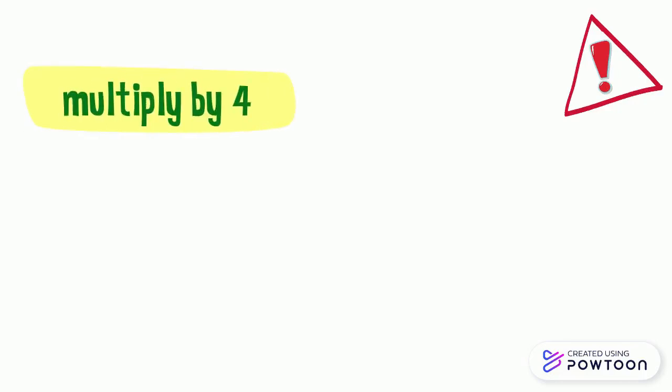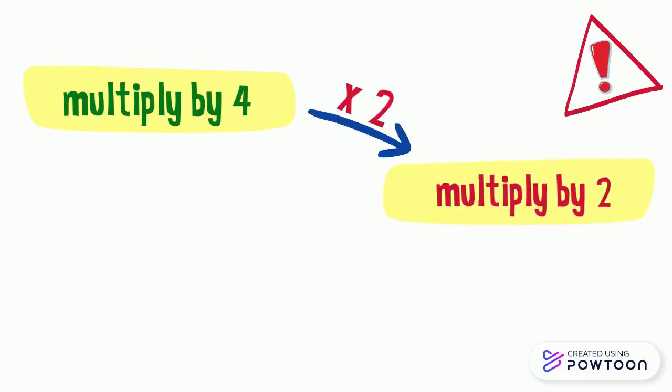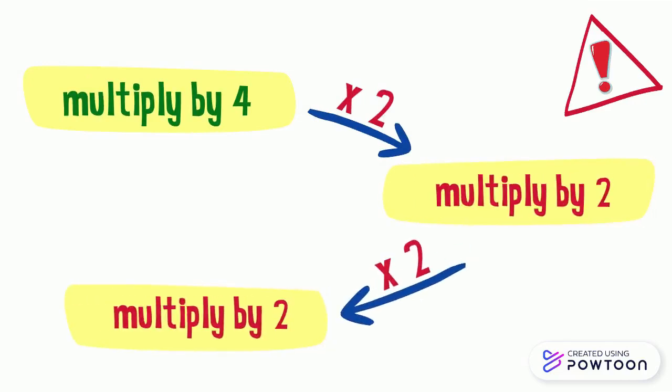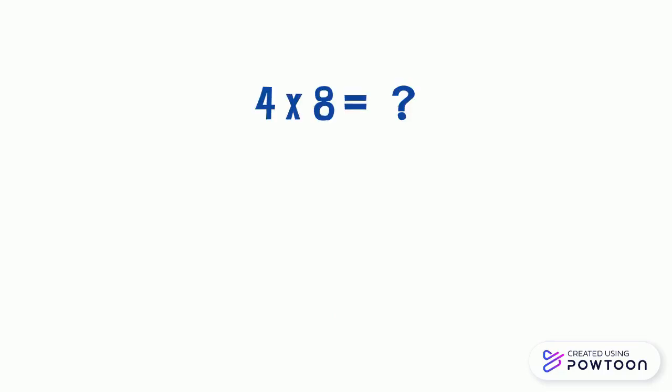Notice that when we want to multiply a number by 4, we can first multiply this number by 2, then multiply the result by 2. For example, what is 4 times 8? To find the answer, first we multiply the number 8 by 2, which means we should find the double of 8.